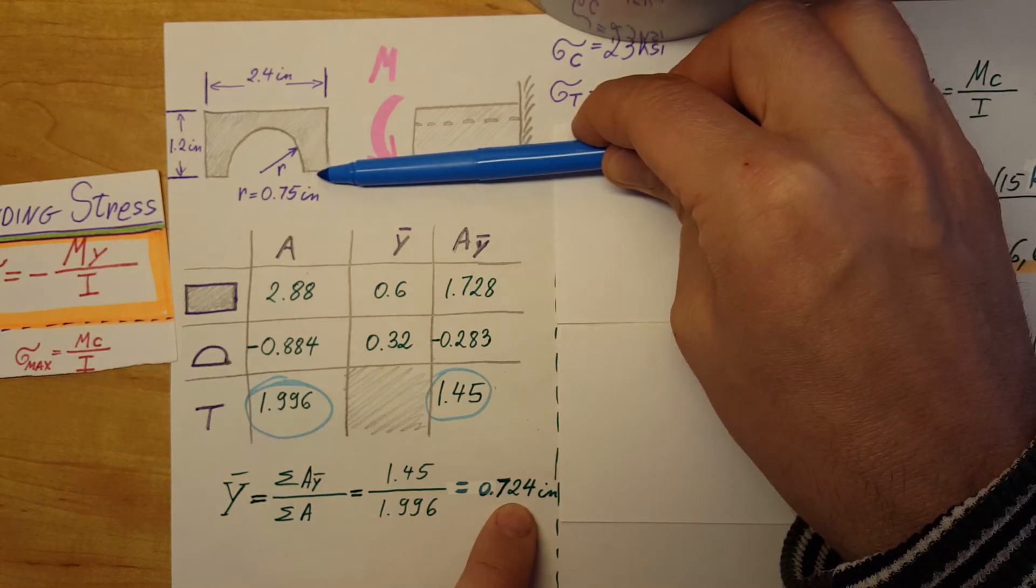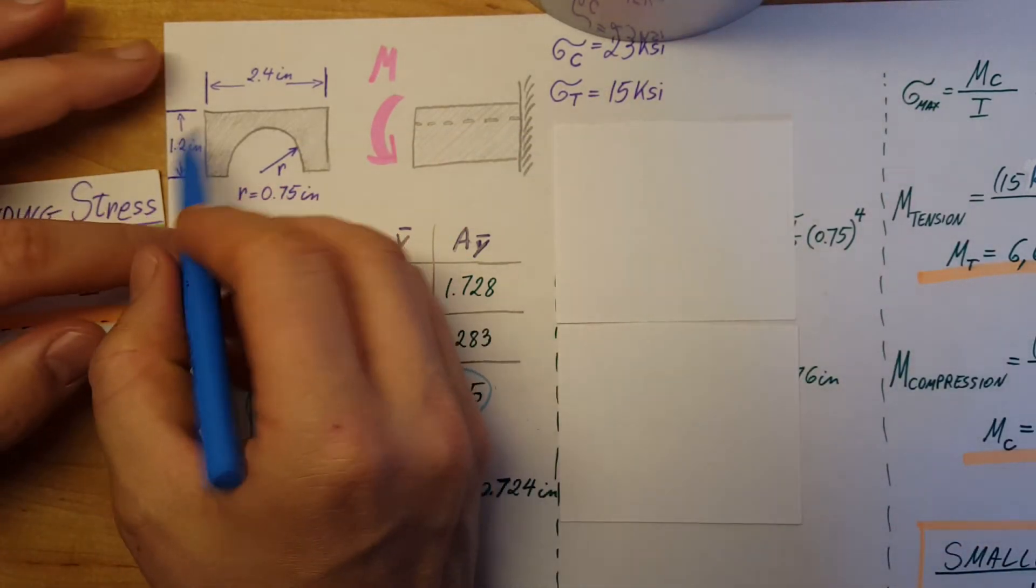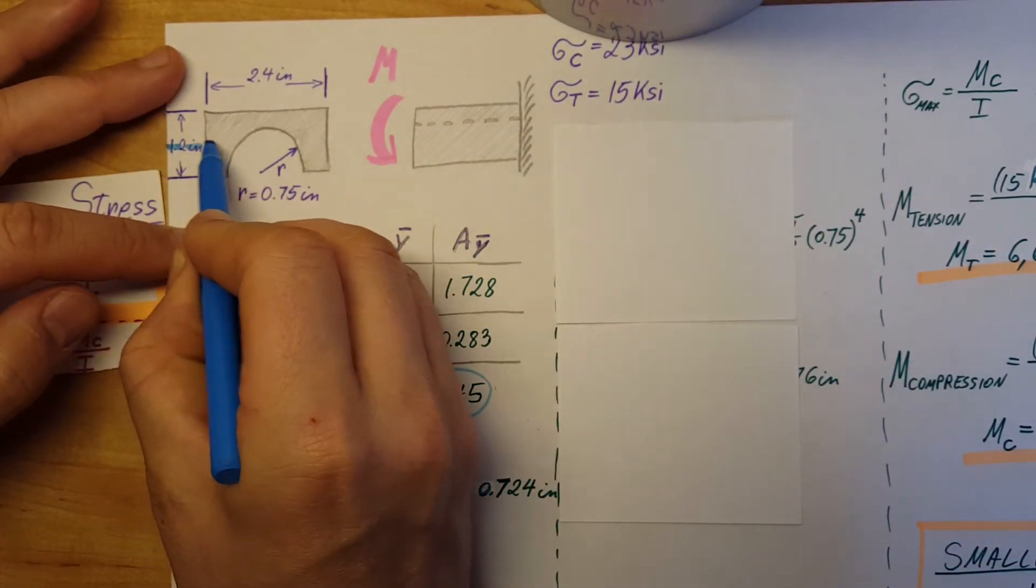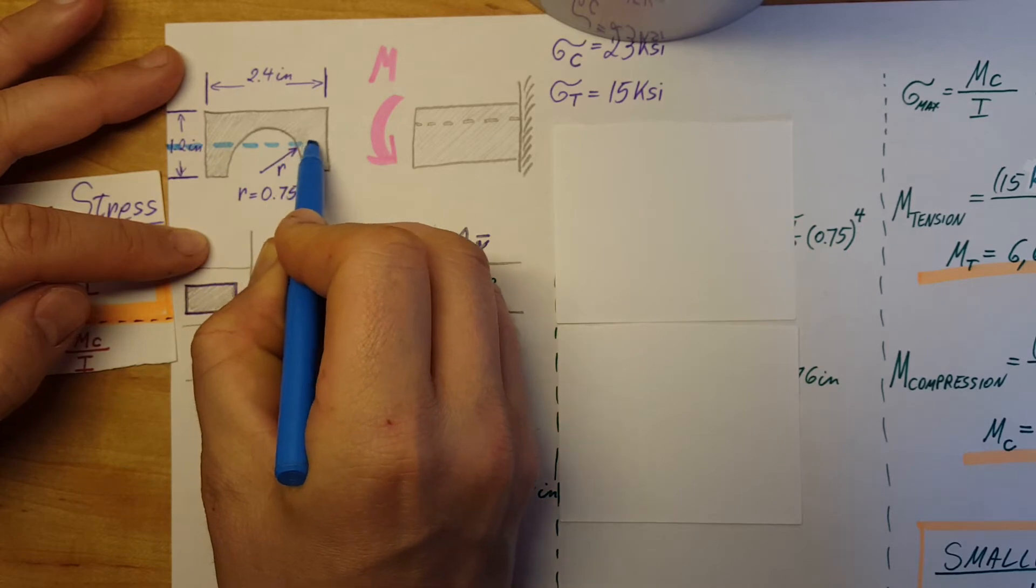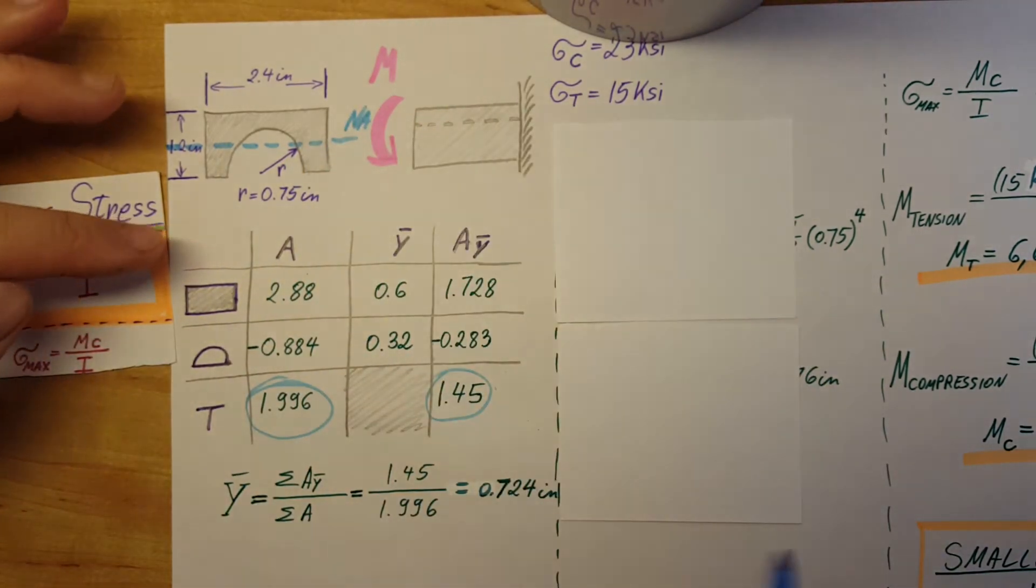So the neutral axis will be from here, calculating 0.724 inches upwards, so it will be somewhere over here. This is my neutral axis.